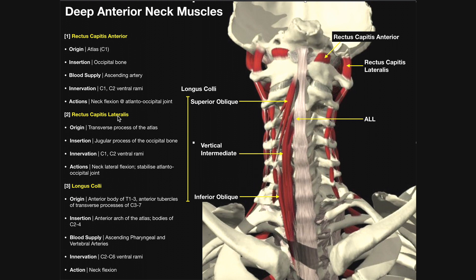The second muscle is rectus capitis lateralis, located lateral to the corresponding rectus capitis anterior on each side. These muscles are the analogs of the obliquus capitis superior from the suboccipital region. Rectus capitis lateralis has its origin on the transverse process of the atlas — that's the inferior attachment — and the insertion is the superior attachment on the jugular process of the occipital bone, lateral to the insertion of rectus capitis anterior.